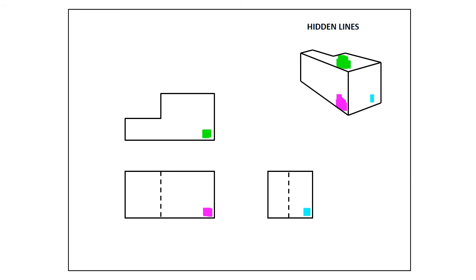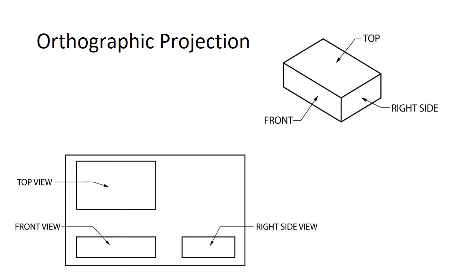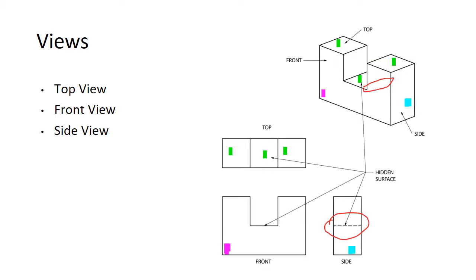Here's another orthographic projection — it's just a block. It'd be like looking at a box of pencils: you've got three views, you look at it from the end, the front, and the top. Here's one that's a little more complicated — I've got the top view in green, the pink view is the front view, and the blue one is coming in from the side. I circled it in red — the hidden line — because on that end view you wouldn't be able to see that notch cut out of this block, but we know it's there, so we represent it with a hidden line, which is a dashed line.